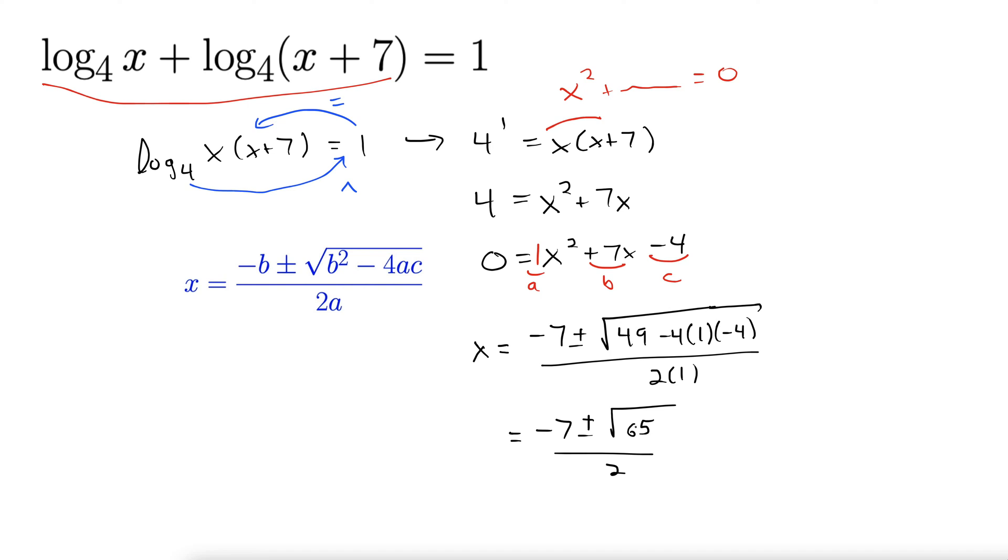Well 65 doesn't break down in any way that we can get it out of this radical, so that's stuck behind. The one thing we can do here, though, if we have a minus, negative 7 minus rad 65, that's going to give us a negative number. And we cannot put a negative number inside of x because logs can't have negatives inside them. So we ditch the negative solution, leaving only negative 7 plus rad 65 all over 2.